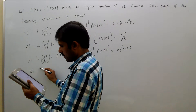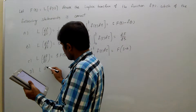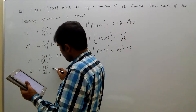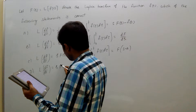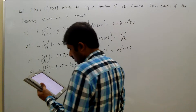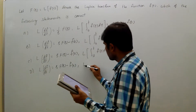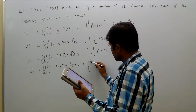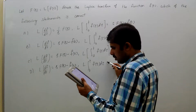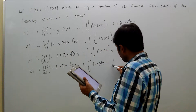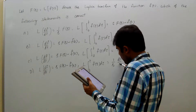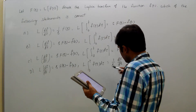Option D: Laplace transform of dF/dt equals S times F of S minus F of 0. Laplace transform of the integral from 0 to t of F(tau) d-tau equals (1/S) times dF/dS.